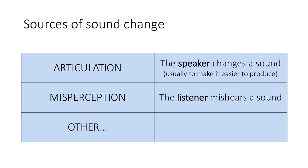Why does sound change occur? We can split it into two different types of sources for sound change. One is driven by the speaker. One reason something might change is because, as speakers — as we've talked about a lot — we are lazy. Remember co-articulation, how sounds affect neighboring sounds because our tongue doesn't want to move as much? The same thing can be the driver of sound change. Sometimes speakers will change the way something sounds systematically — sometimes to make it easier to produce, or for some other reason, like a social motivation, which we'll talk about next week.